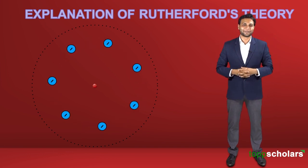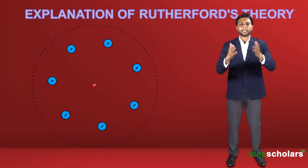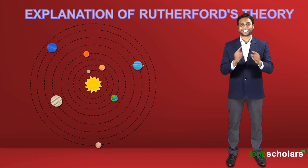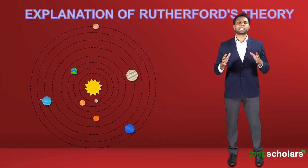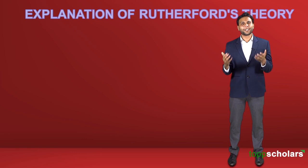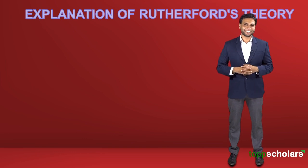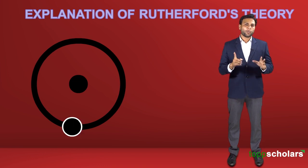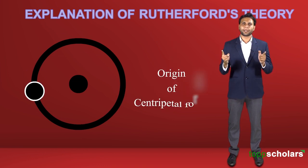During that time, the Copernican theory that planets revolved around the Sun had been accepted, so Rutherford said the revolution of electrons was similar to our solar system.